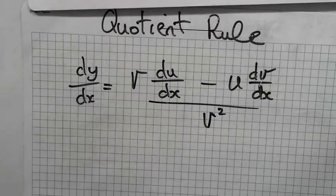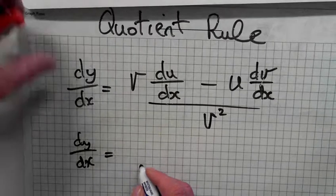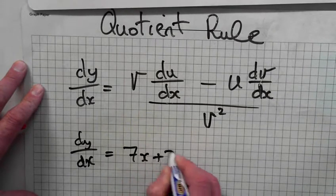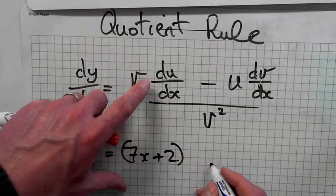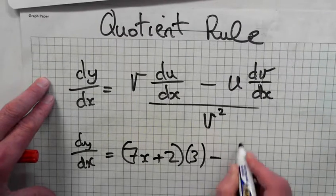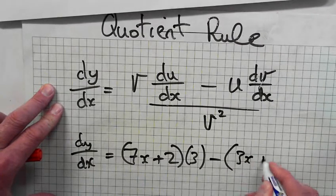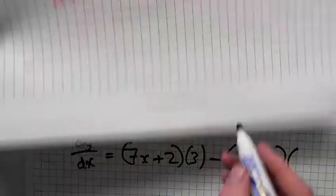Well, fill in the values. So then, dy/dx is equal to, what's v? 7x plus 2, times du/dx. Du/dx is 3. Minus sign, brackets again, u. 3x plus 1, times dv/dx is 7.